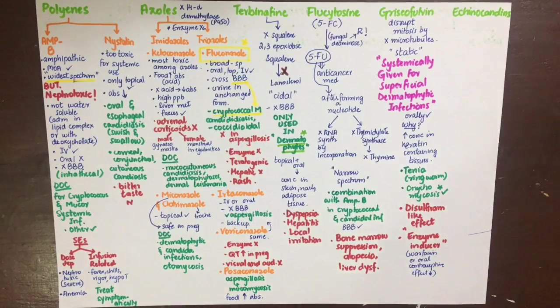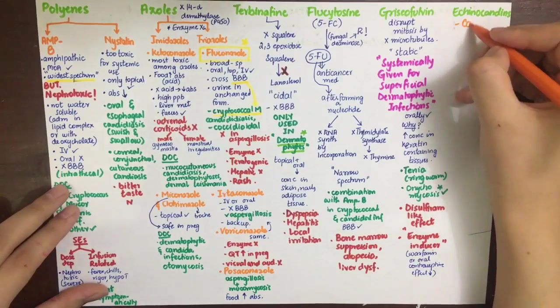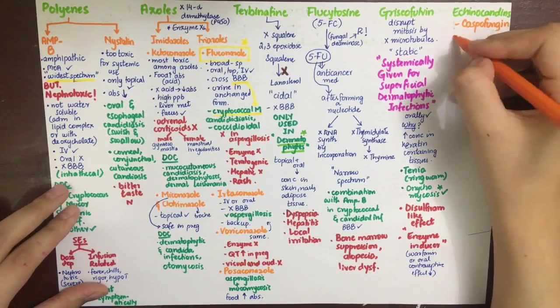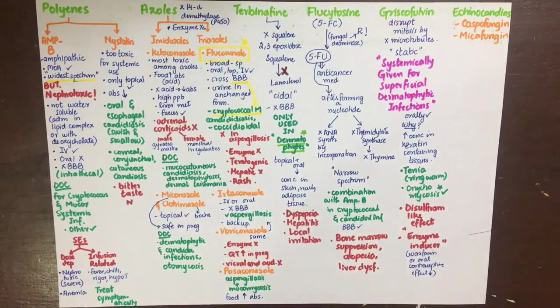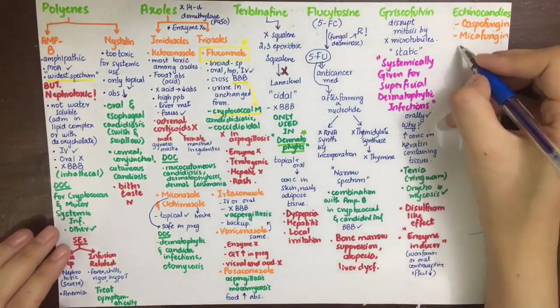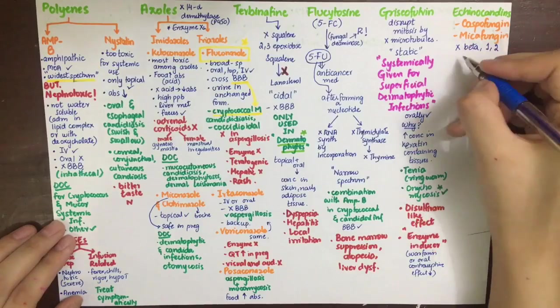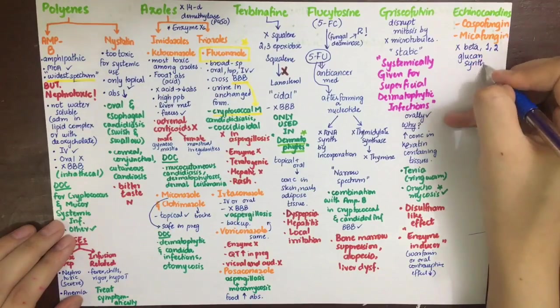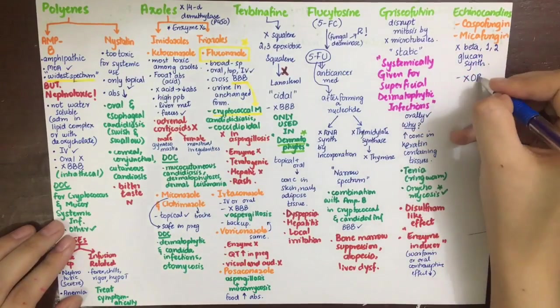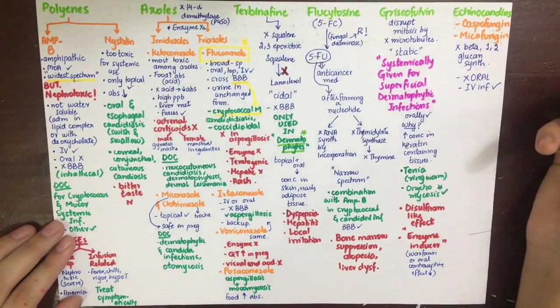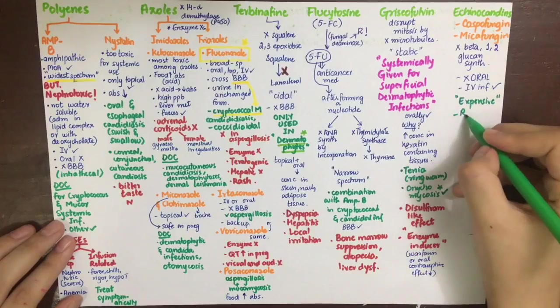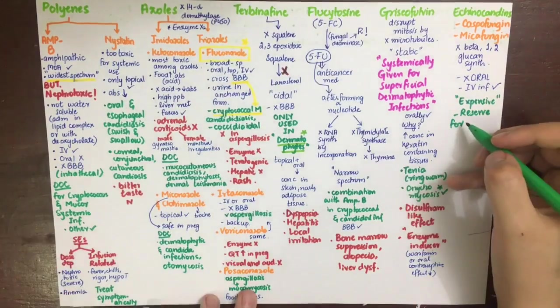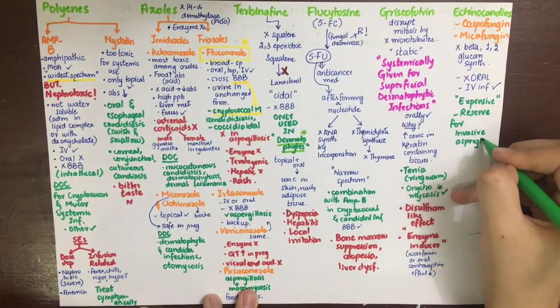Lastly, we have the echinocandins, which are the drugs that end in fungin: caspofungin and micafungin. Their mechanism of action is by inhibiting beta-glucan synthase in the fungal cell wall and thus decreasing fungal cell wall synthesis. It is not given orally but by IV infusion. It is expensive and thus a reserve drug for invasive aspergillosis and candidiasis.